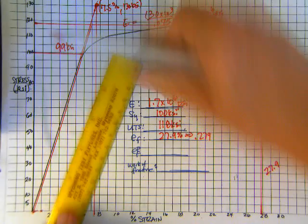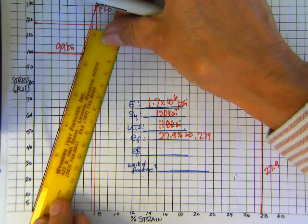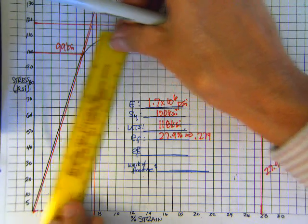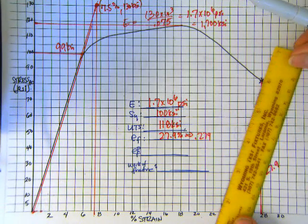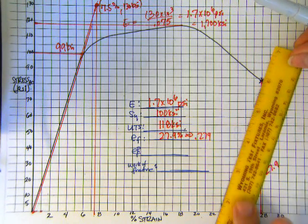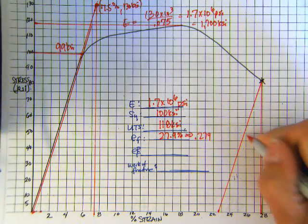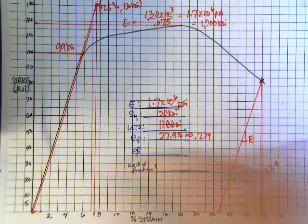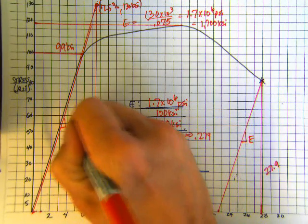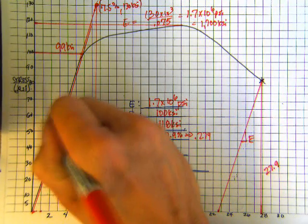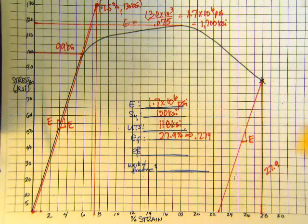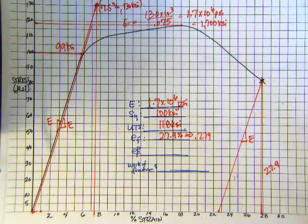And in unloading, we would recover all of the elastic strain and we'd be left with only the plastic strain. Well, we're going to do that graphically by setting our straight edge modulus line. I'm going to slide it horizontally. Hopefully don't twist it any.